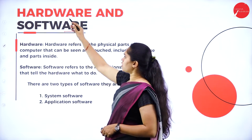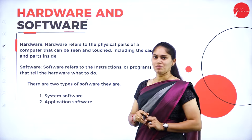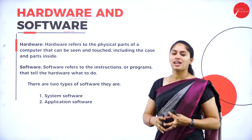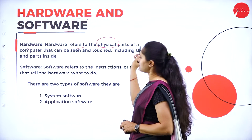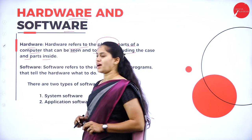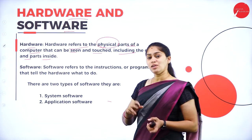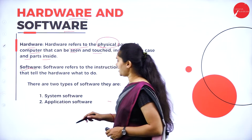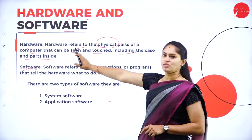Next, hardware and software — these are basic terminologies you must be familiar with. Hardware refers to the physical components of a computer system that we can touch and feel, including the case and parts inside. Software refers to a set of instructions that guide the hardware on what to do. Without software, the hardware is just a dumb machine — like a mobile phone without an operating system.